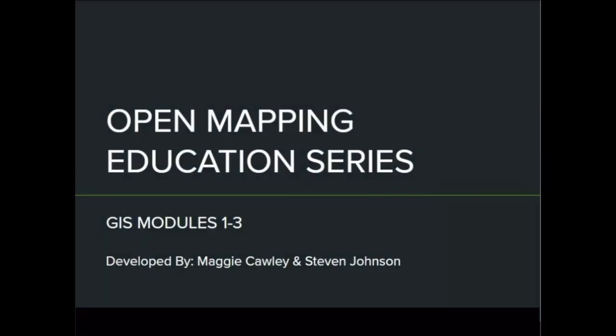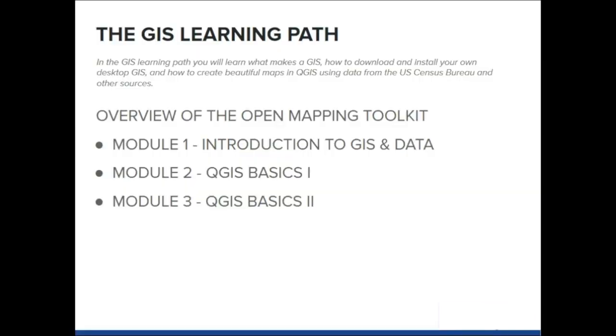Welcome to the Census Academy Open Mapping Series. You have chosen the Geographic Information Systems Learning Path. In the following three modules, you will learn what makes the GIS, how to download and install your own desktop GIS, and how to design your own maps in QGIS using data from the U.S. Census Bureau and other sources. This is GIS Module 1, Introduction to GIS.